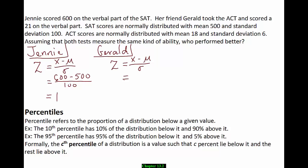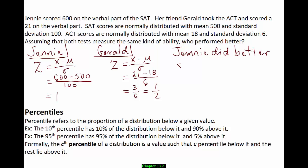Gerald's standard score is (21 minus 18) divided by 6, which is 3 divided by 6, equaling 1.5. They both have positive z-scores, meaning both scored above average. However, Jenny scored a whole standard deviation above average while Gerald scored only half a standard deviation above average. So Jenny did better since she scored a whole standard deviation above average.